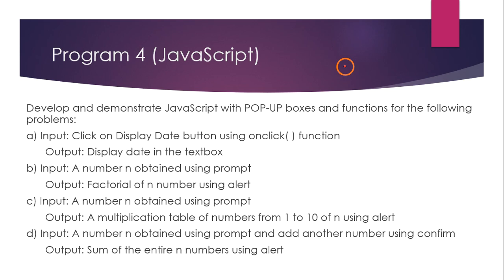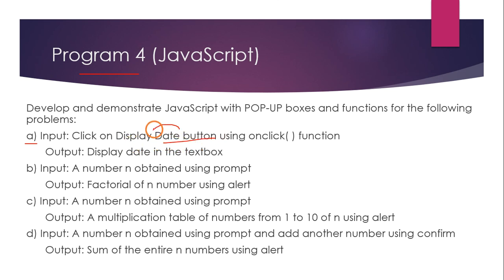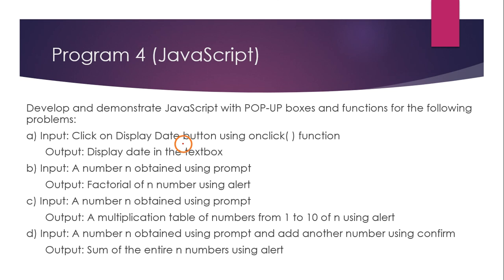Welcome to this video series on web technologies lab. In this video we are going to look at program 4. In this program there are four sub-programs. The first program is asking us to display a button with the text 'date'. When you click this button using the onclick function, we have to display the current date in a text box.